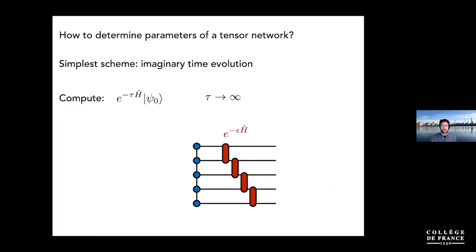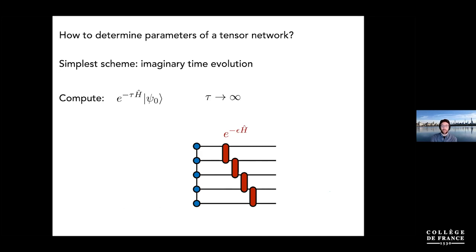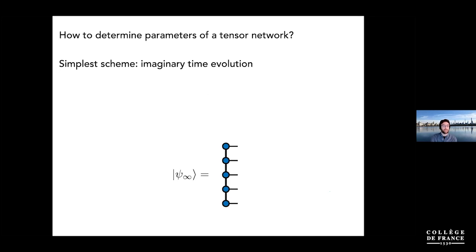Each time you do these factorizations, the internal bond indices in the network grow automatically. It's adaptive, adjusting automatically to always have the minimal parameters needed to represent the low-entanglement states you approach as you go toward the ground state. Alex will be using a more sophisticated version of this in the next talk.